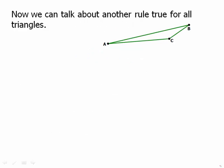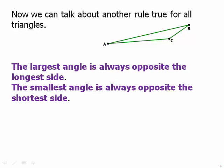Now, we can talk about another rule true for all triangles. The largest angle is always opposite the longest side. 100% of the time, the largest angle is opposite the longest side. And the smallest angle is always opposite the shortest side.